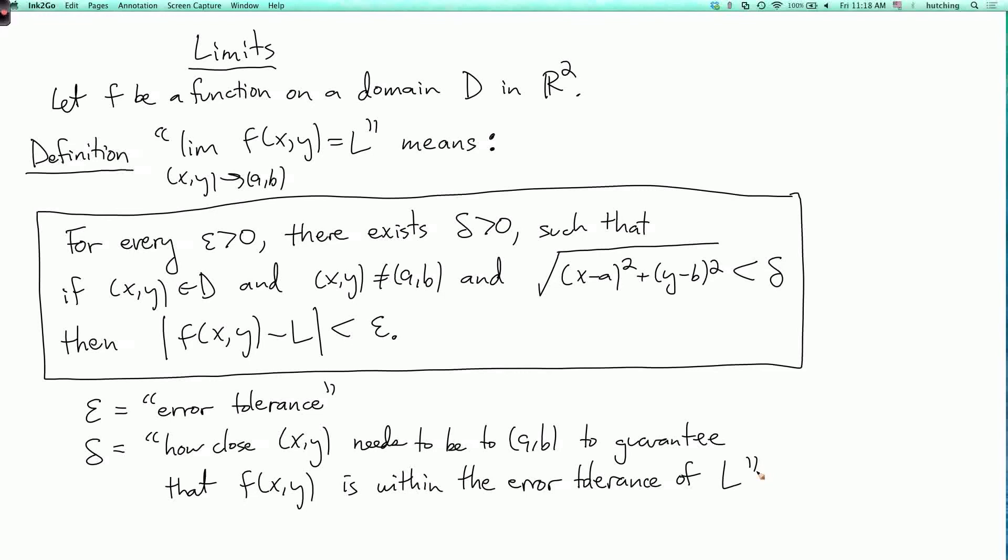So this definition says if you give me any error tolerance, no matter how small, as long as it's positive, there's some δ. So that by requiring (x,y) to be within distance δ of (a,b), I'm guaranteeing that f(x,y) is within distance ε of L. So for ε equals, say, one, there's some δ. For ε equals one over a million, there's also a δ, which is going to be smaller. But there's always a δ.